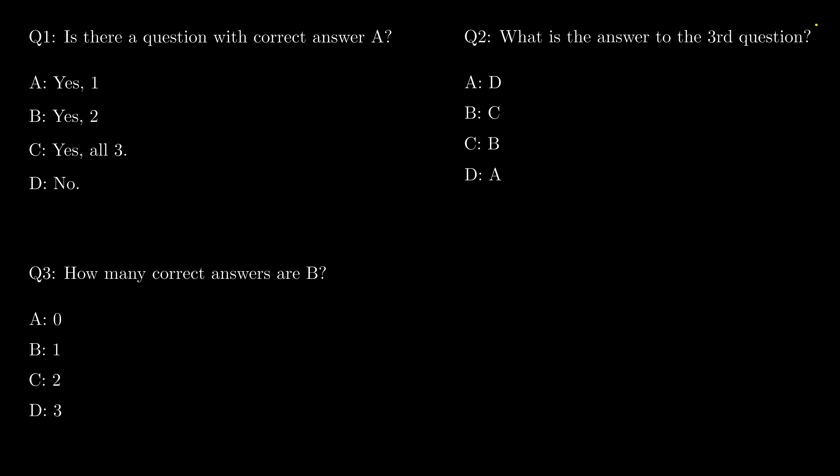If question number two is A, then question number three must be D. Question number two actually locks the answers to all questions. It is clear that question number three cannot be D, therefore this combination is wrong.